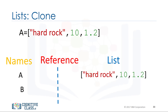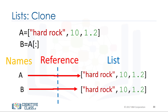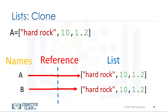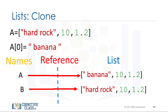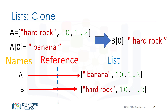You can clone list a by using the following syntax. Variable a references one list, while variable b references a new copy or clone of the original list. Now if you change a, b will not change.